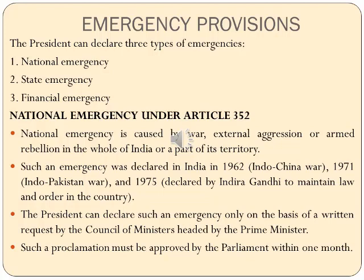Such a proclamation has to be approved by the Parliament within one month, and such an emergency can be imposed for six months. It can be extended by six months by repeated Parliamentary approval. During such an emergency, fundamental rights of Indian citizens can be suspended, and six freedoms under the right to freedom are automatically suspended. However, the right to life and personal liberty cannot be suspended according to the original constitution.